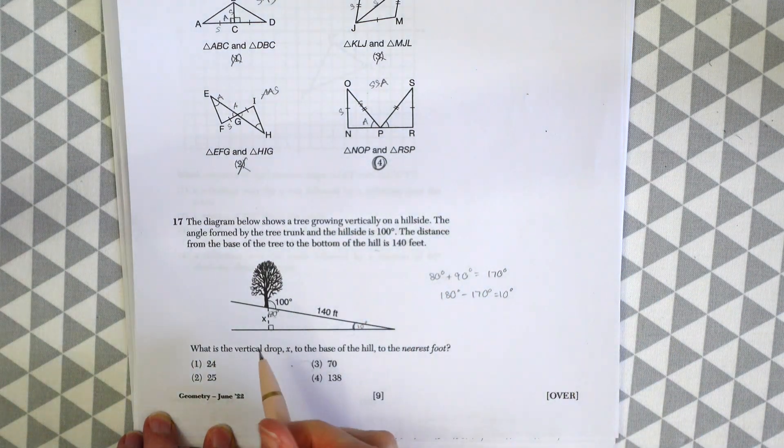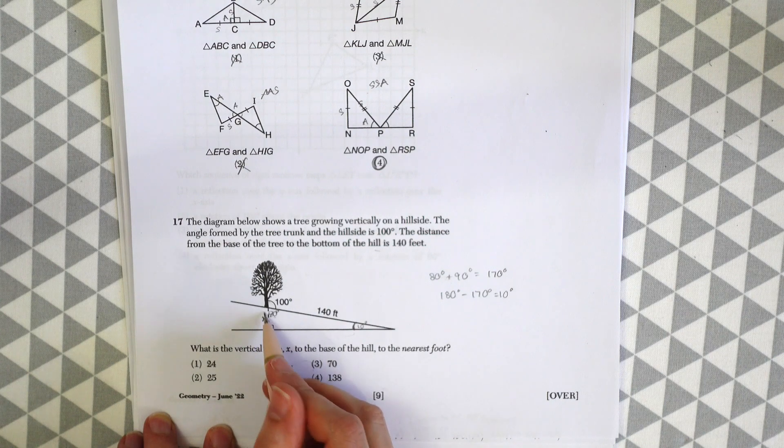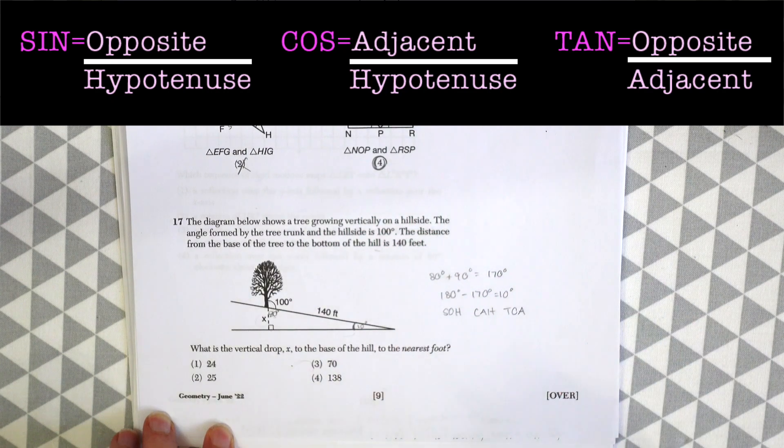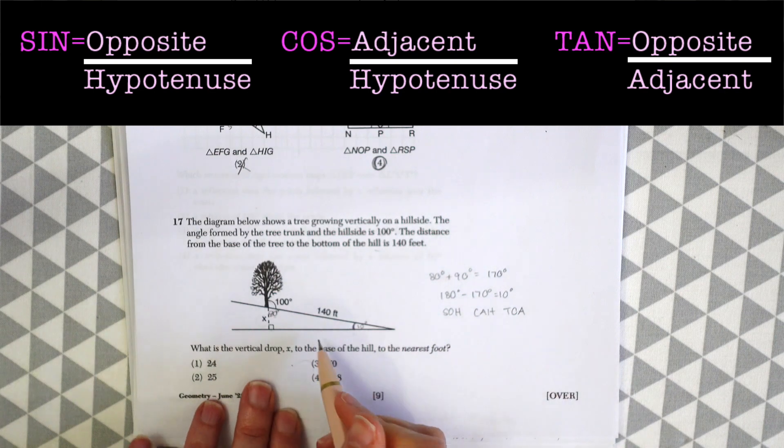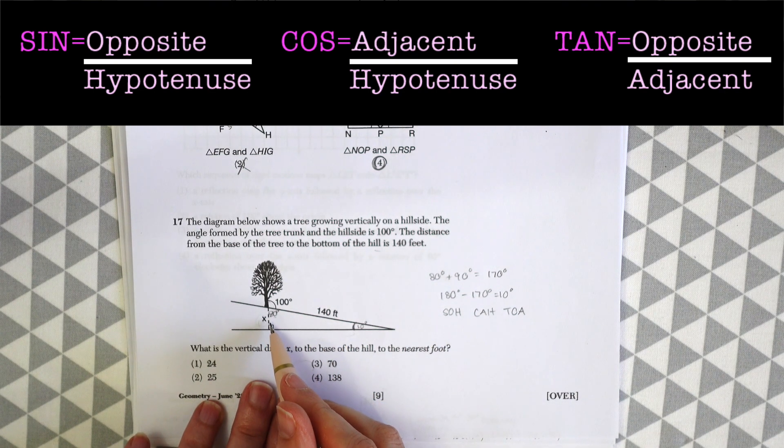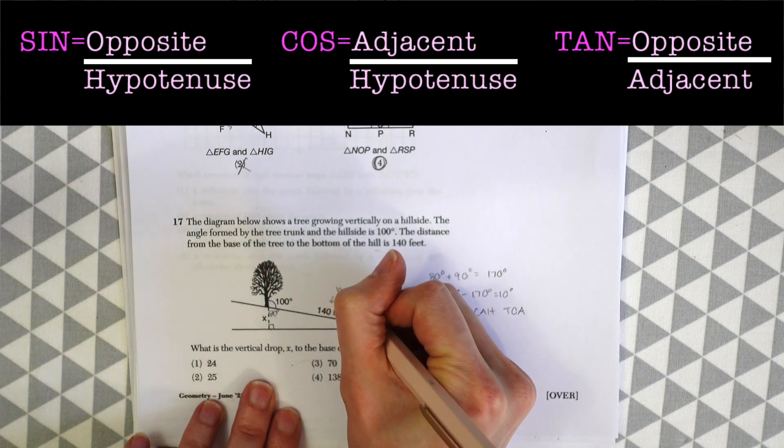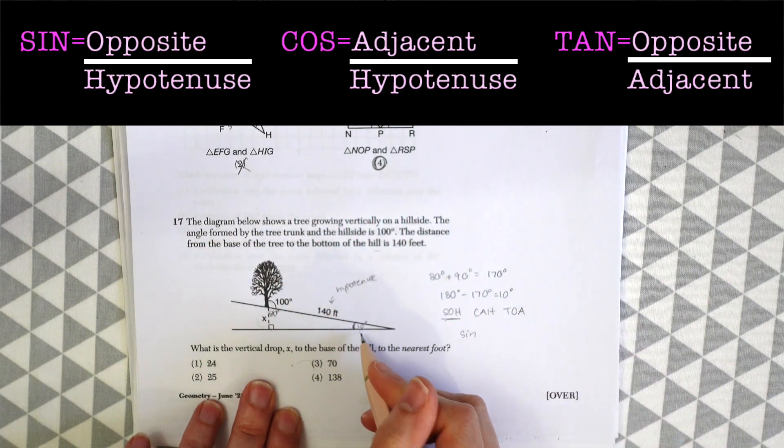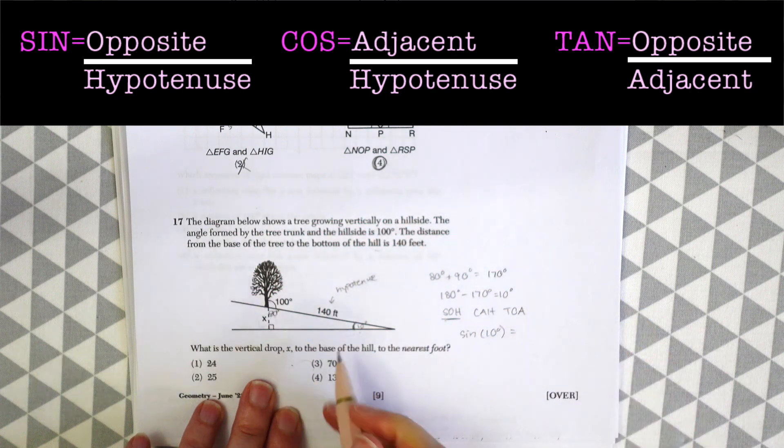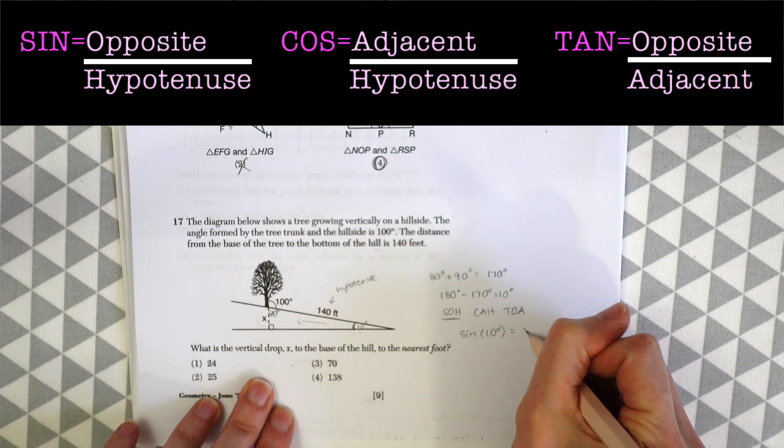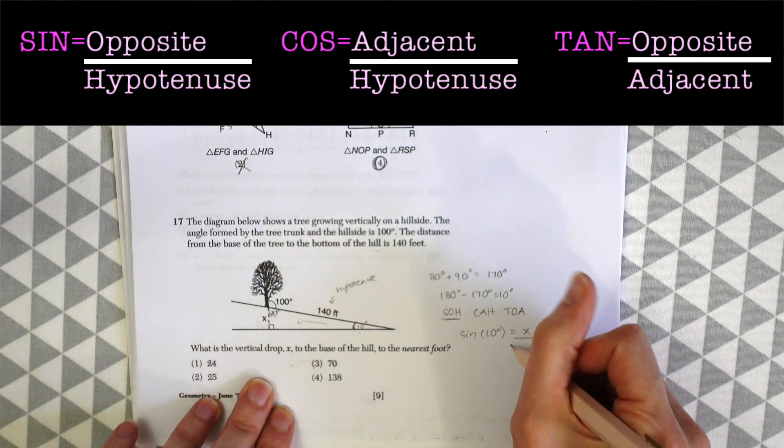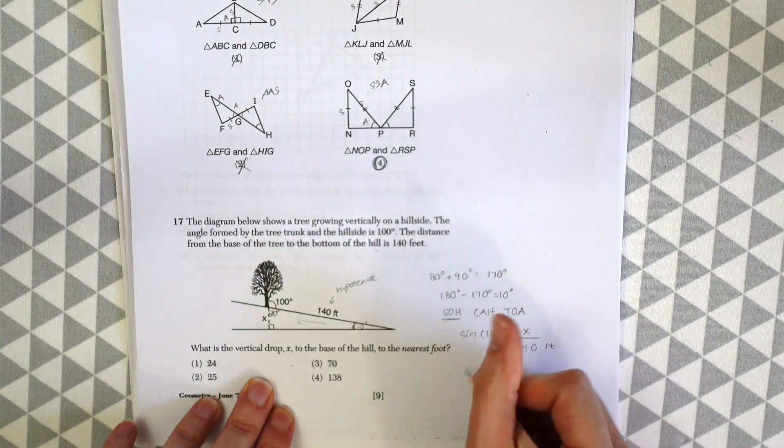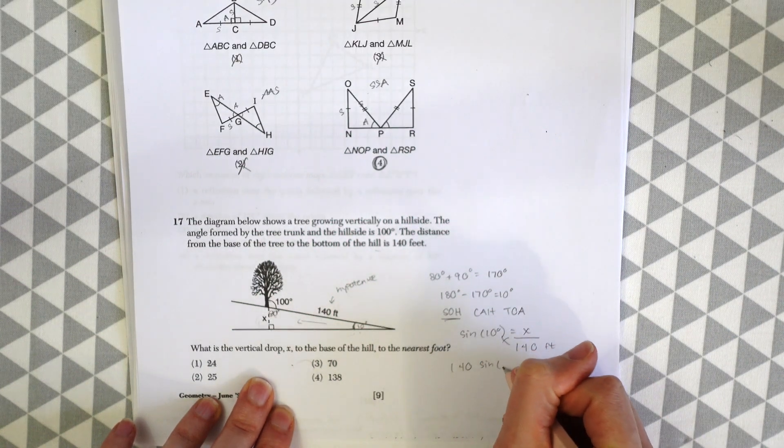So knowing that, we can now find the value of this X value here, this height, using SOHCAHTOA, the regular trigonometry functions. So here we go. So look, we want to know what the value of the opposite side is, and we have the hypotenuse value. So that means we're going to be using sine. So we have sine of 10 degrees is equal to the opposite, X, which we want to know, over the hypotenuse, 140 feet.